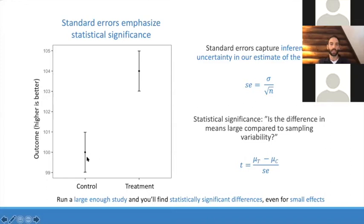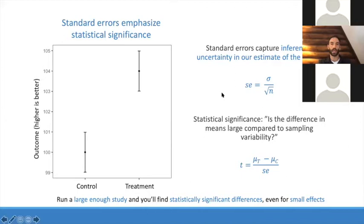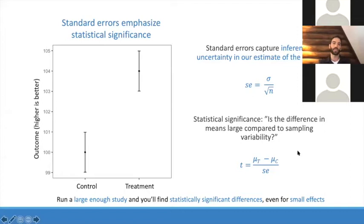What do standard errors emphasize? They really emphasize statistical significance. Standard errors capture inferential uncertainty in our estimate of the mean — it's the population standard deviation divided by root N. As we make a sample bigger, we can get more and more certain about the mean. By making that standard error very small, you can drive up the T-statistic and drive down the p-value and get statistical significance. If you run a large enough study, you'll find statistically significant differences even for small effects.